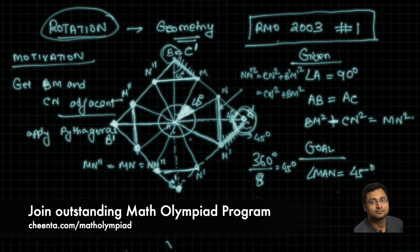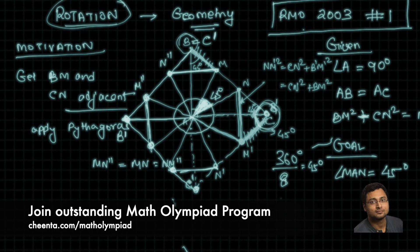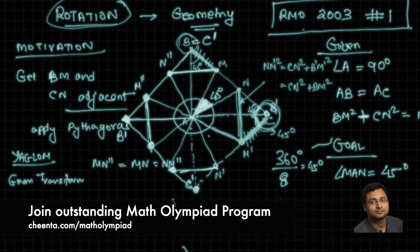Now, there is a very nice book by Yaglom called Geometric Transformation. We use it in our math olympiad program all the time. In Geometric Transformation, this is volume one to four, there are four volumes. They have a lot of problems related to rotation, inversion, translation, all sorts of geometry transformations. So, you can check it out. It's probably available online. Keep on doing great mathematics. I will see you in the next one.